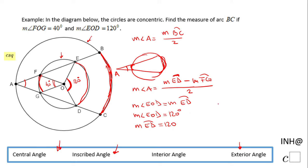And then we're going to look at arc FG and angle FOG. The measure of angle FOG is the same as the measure of arc FG. Why? Because of the same reason, angle FOG is a central angle. And the measure of angle FOG is given to us as 40 degrees. So the measure of arc FG will also be 40 degrees.